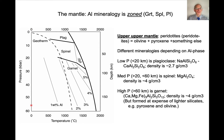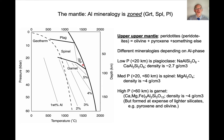On a pressure-temperature diagram with temperature increasing to the right and pressure increasing downward, in the shallow mantle we have plagioclase, in the intermediate upper mantle we have spinel, and in the deeper mantle we have garnet. Orthopyroxene also contains some aluminum — its weight percent of aluminum increases with increasing temperature, so there are regions where orthopyroxene is actually the dominant aluminous phase.